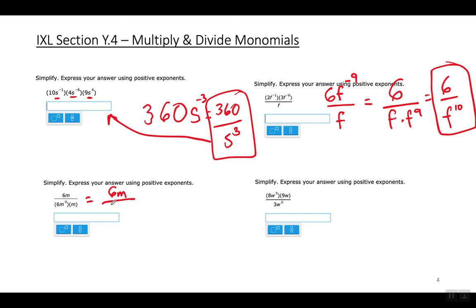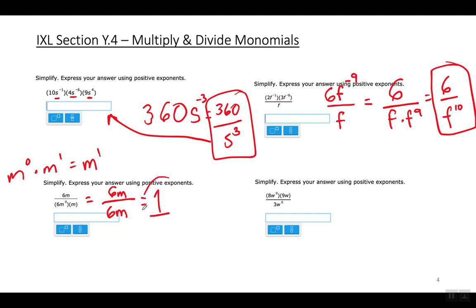Simplify the bottom first: 6 times m — when multiplying m to the zero times m to the first, add exponents to get m to the first power. So the bottom is 6m. Since 6m divided by 6m equals 1, the answer is 1.